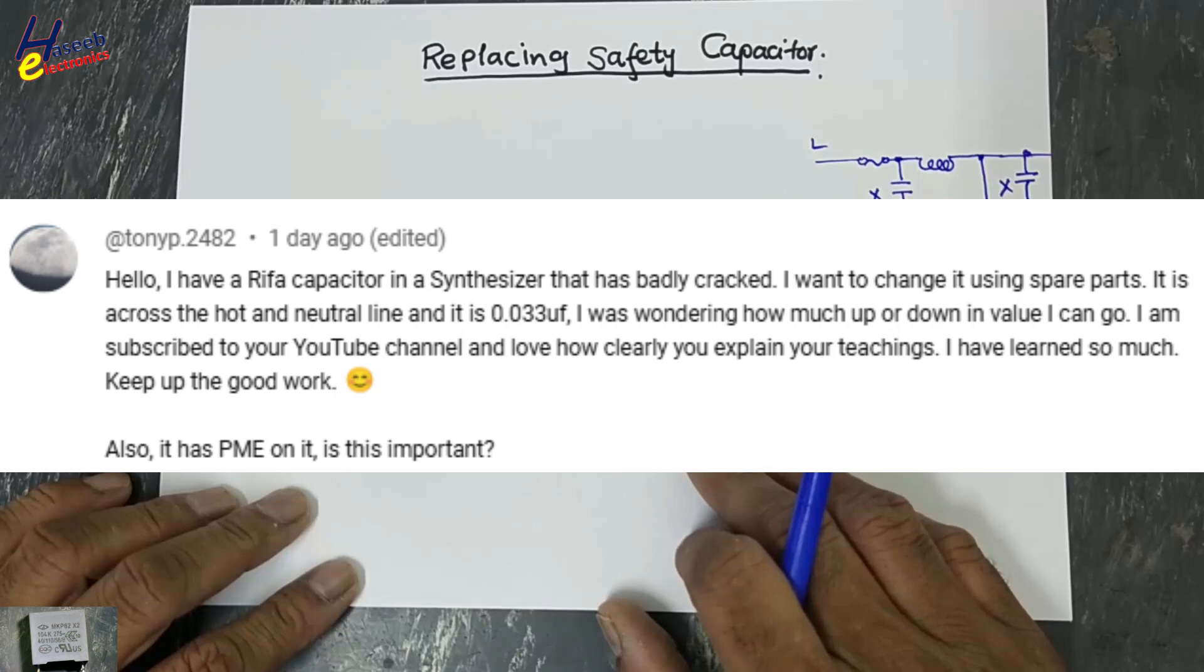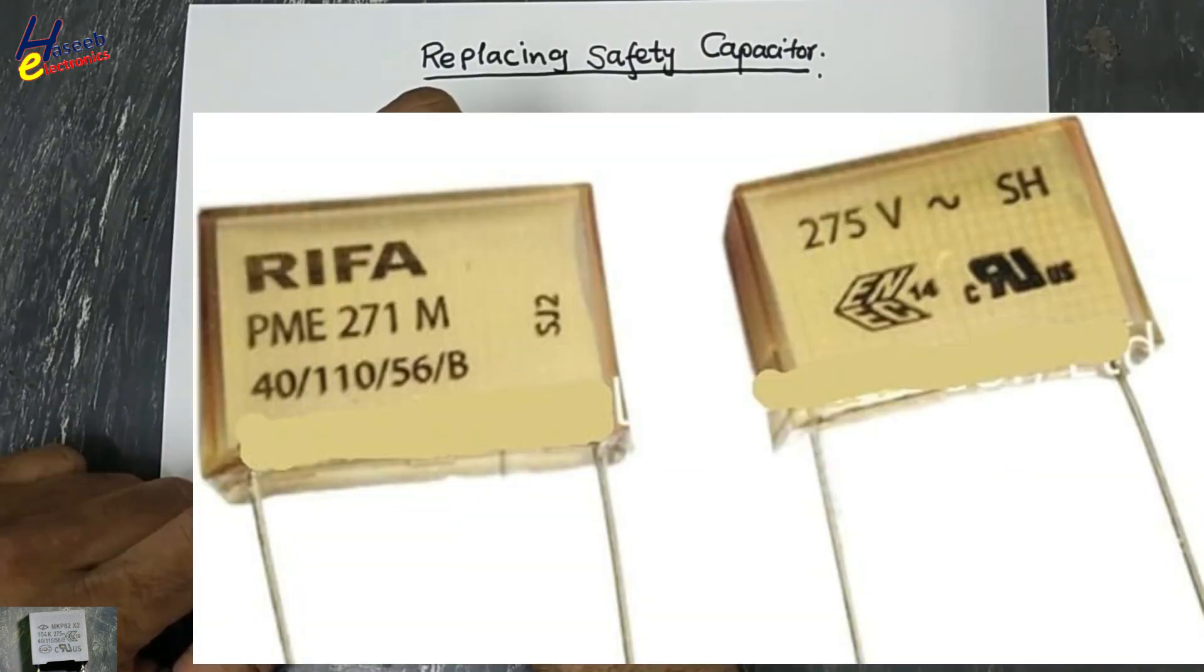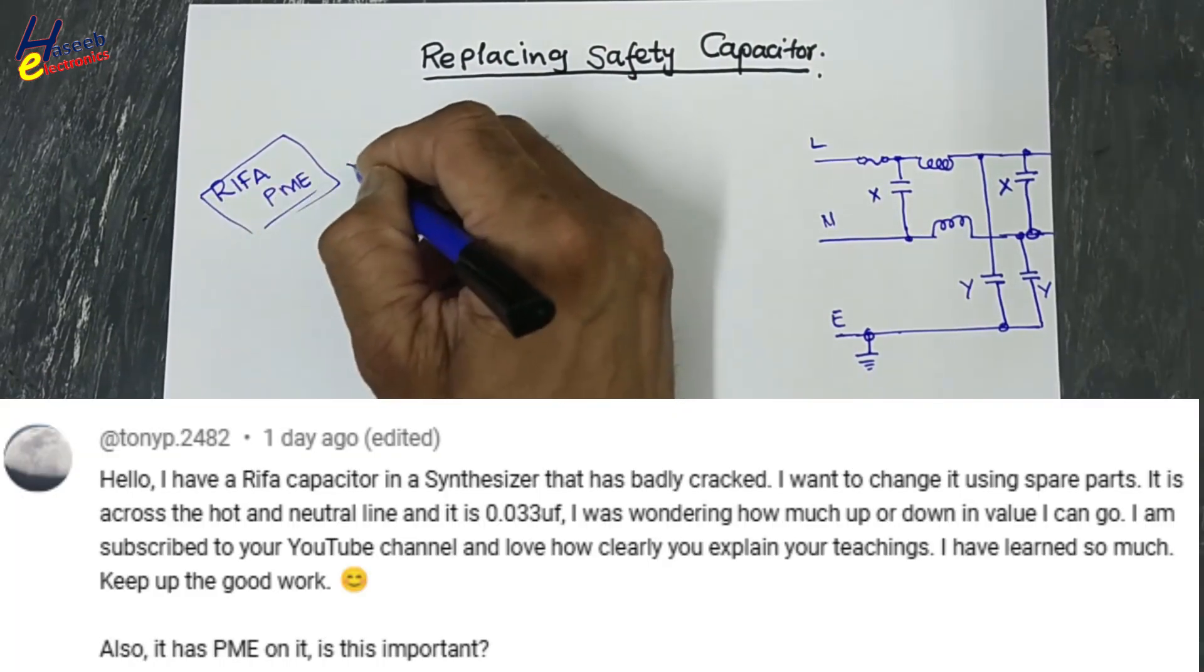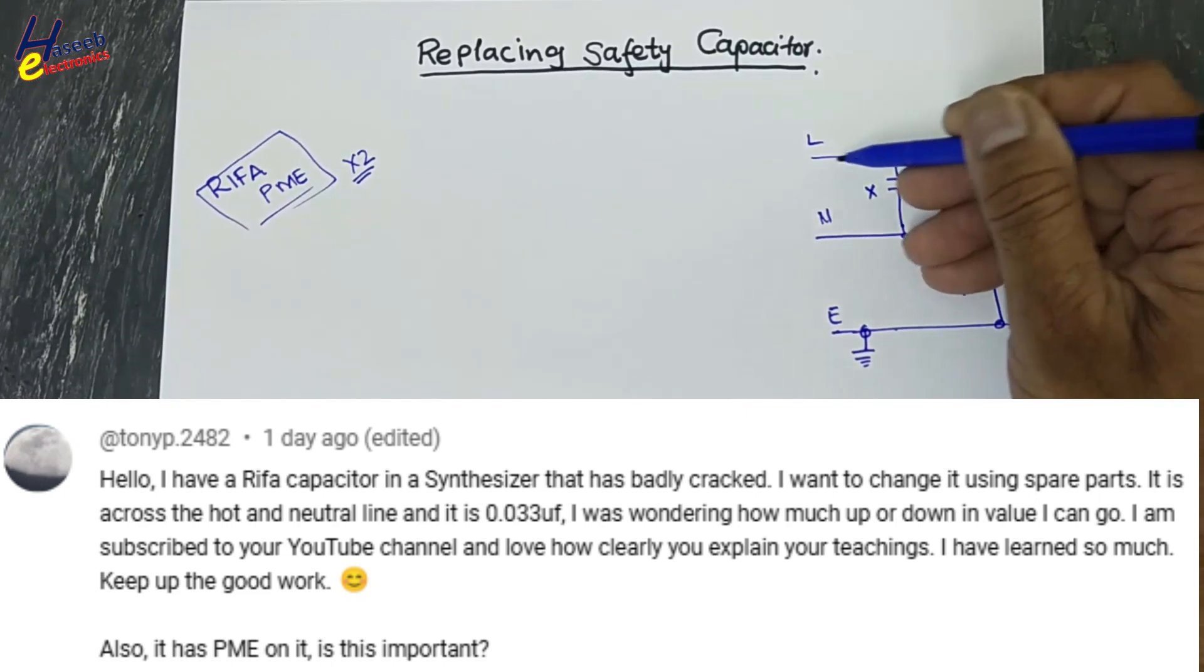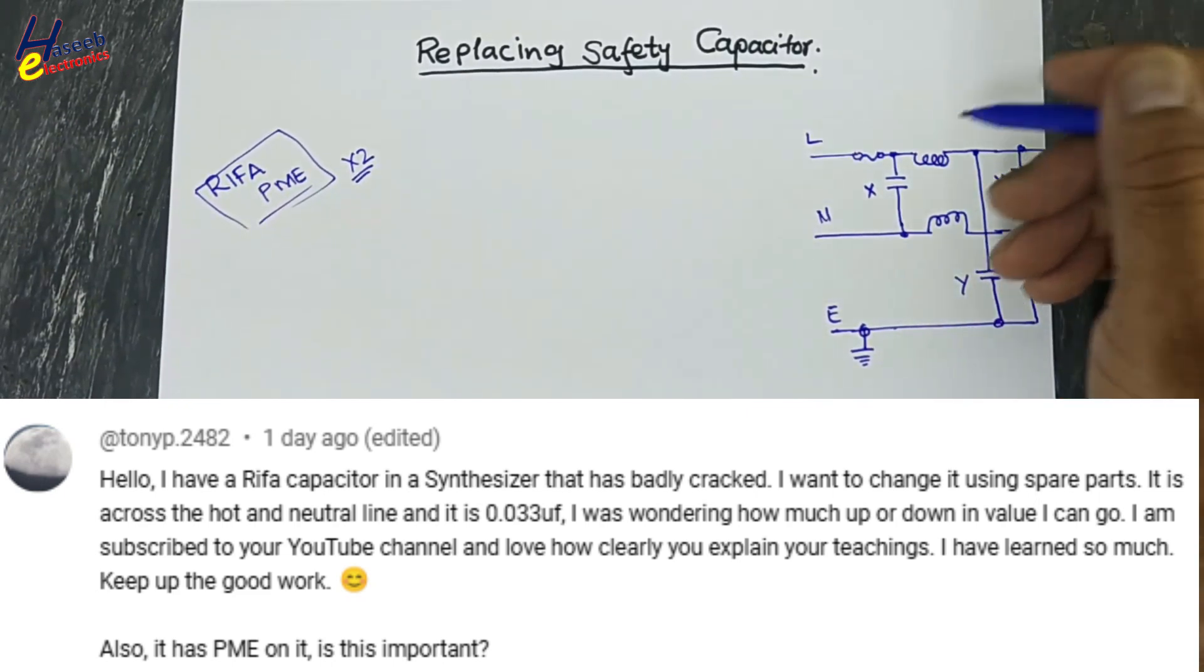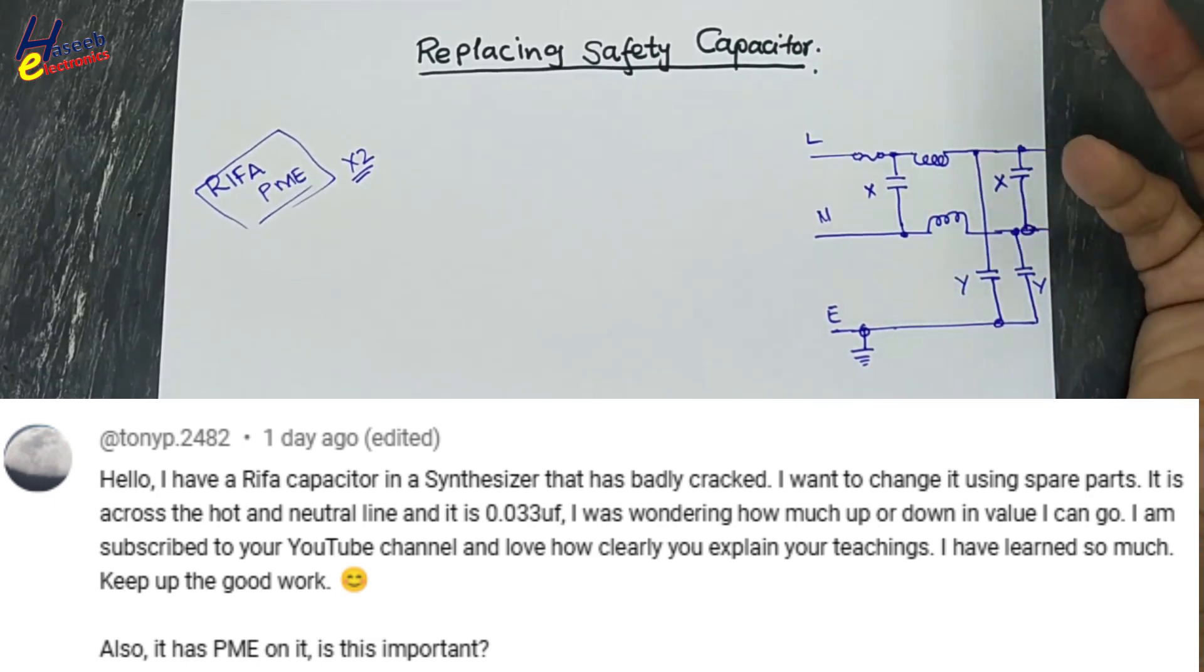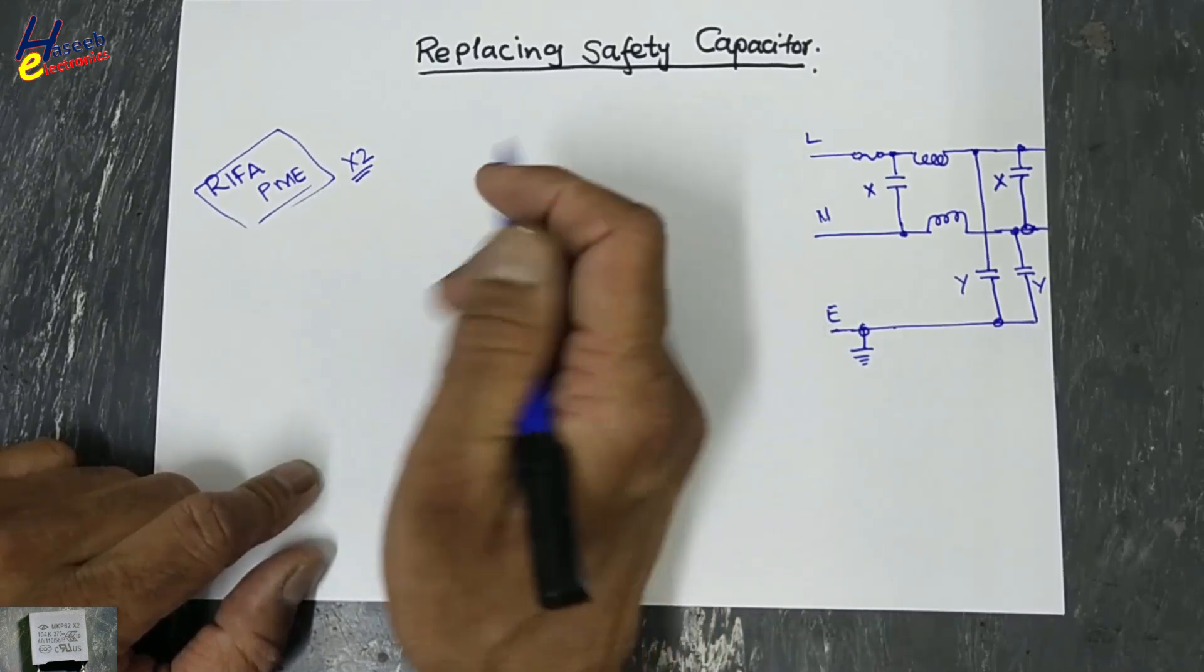He has a circuit that was using RIFA PME series safety capacitor, which is basically an X2 capacitor. He mentioned in the comment that the capacitor is installed in hot side line and neutral. This capacitor cracked badly. How to replace it? There are some basic points that are to be considered.